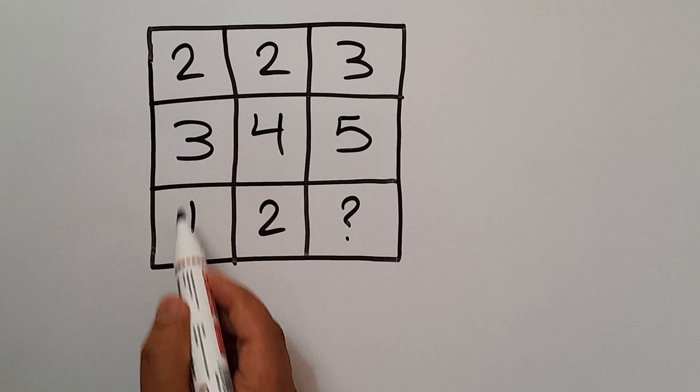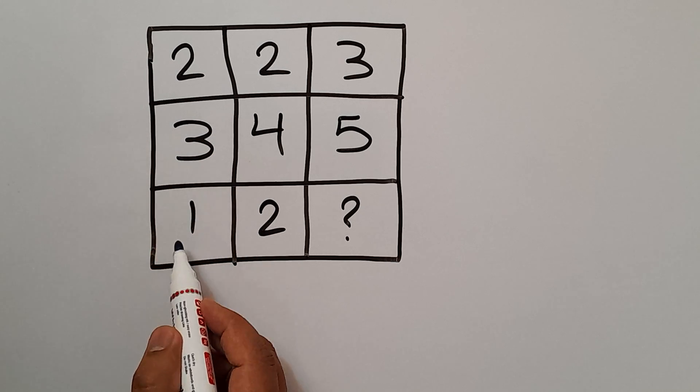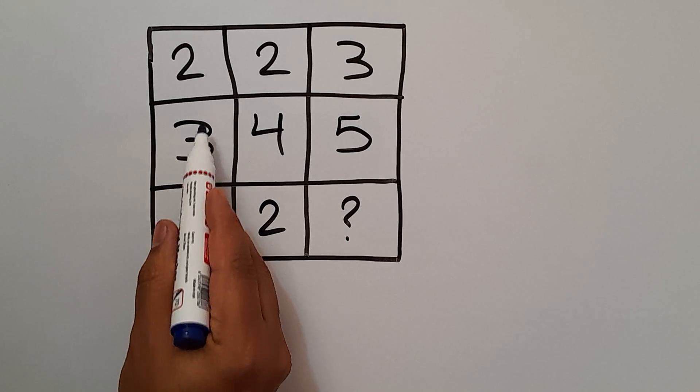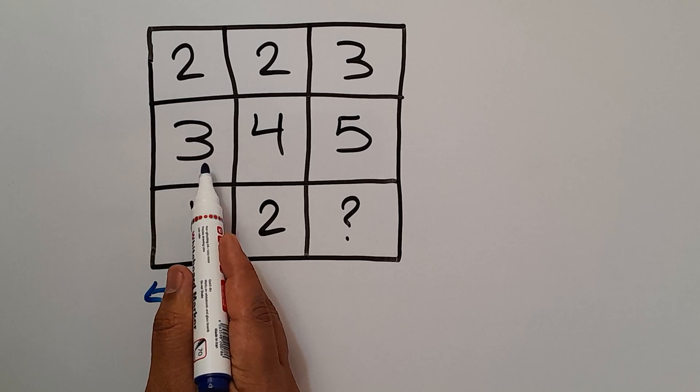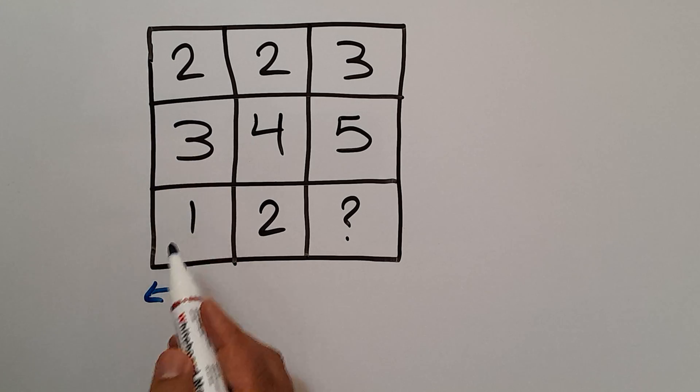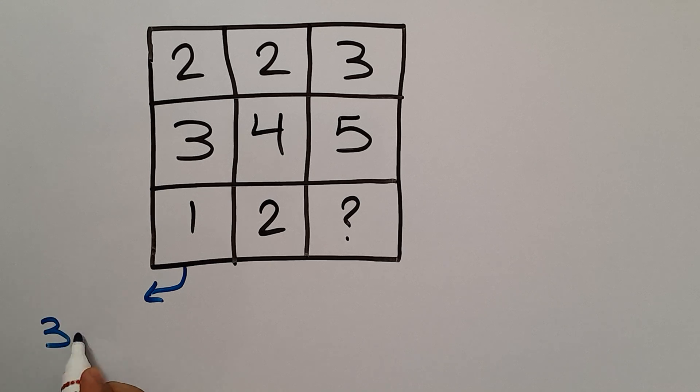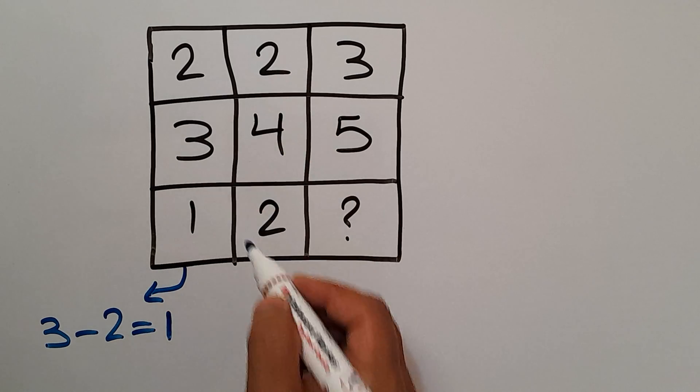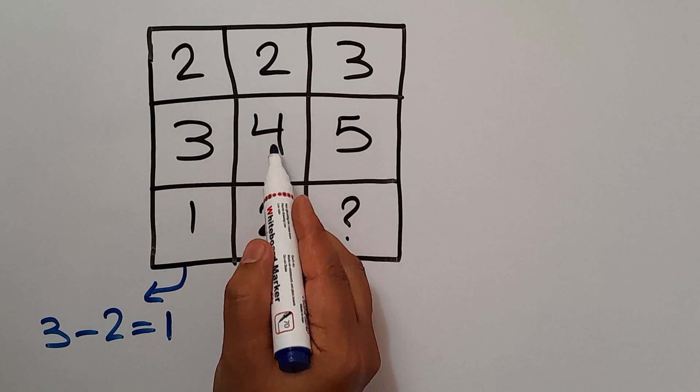In the first column you have 2, 3, and 1. In the first column the second number, which is 3, minus 2 will be equal to 1, the third number. In the second column we have 2, 4, and 2.